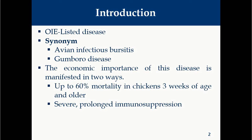The economic importance of this disease is manifested in two ways. First, up to 60% mortality in chickens up to three weeks of age or older birds. Survived birds will show severe prolonged immunosuppression, and due to immunosuppression, secondary bacterial and viral infections occur, leading to death of the animals.